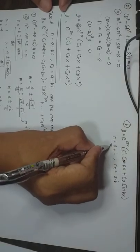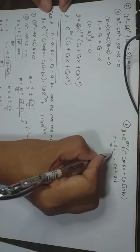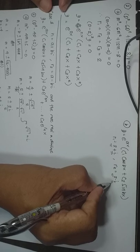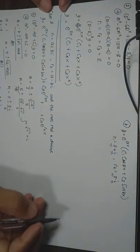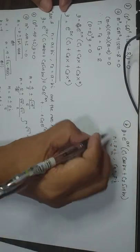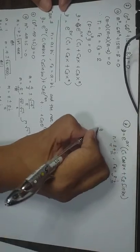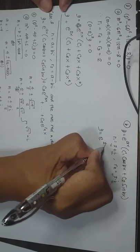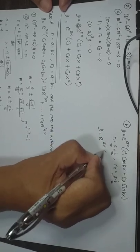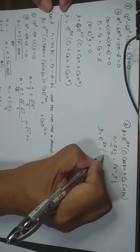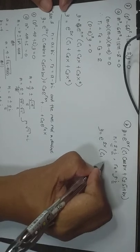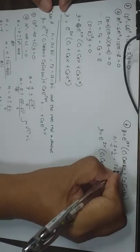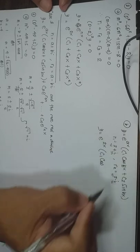So we have A plus Bi and A minus Bi. Your A here is 2. We have Y is equal to E raised to 2X times C sub 1 cosine of B. But what is B? That is 1.